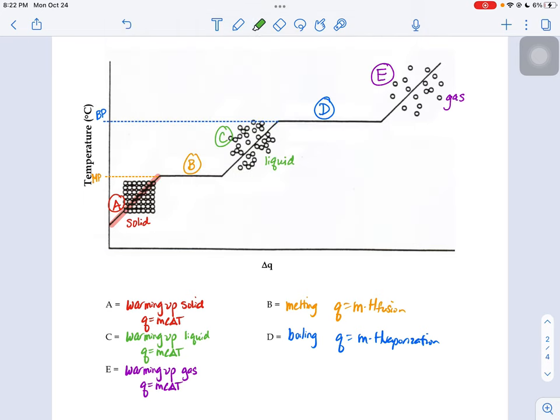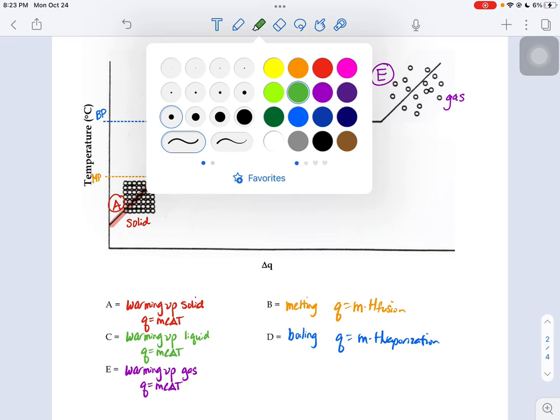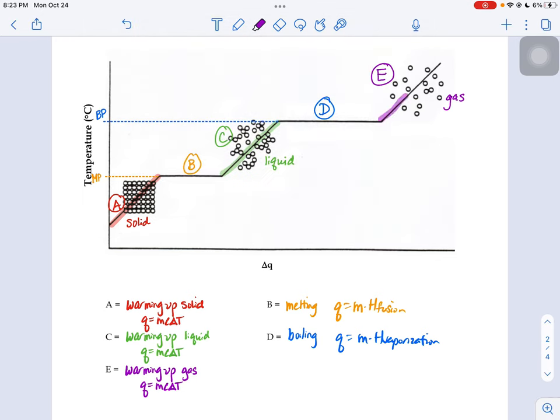And C is liquid the whole time, it's just you're starting off with a cold liquid and ending up with a hot liquid. And up here in E, it's a gas the whole time, it's just the temperature of that gas is changing.